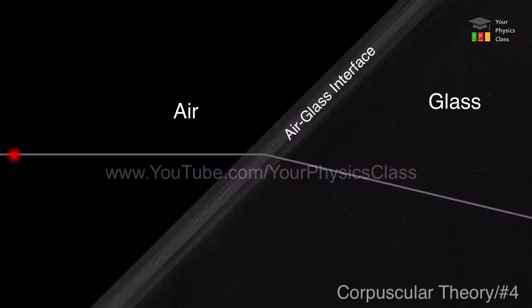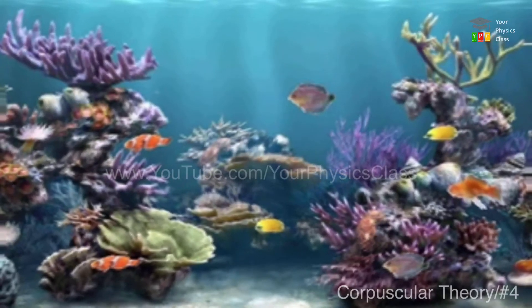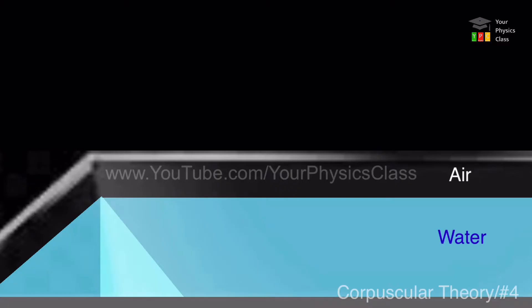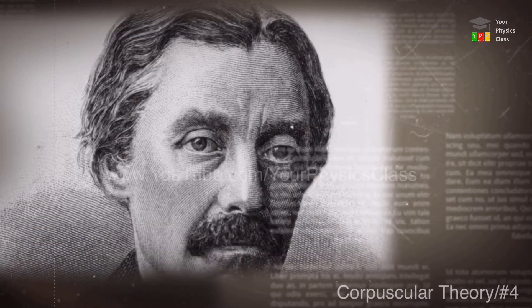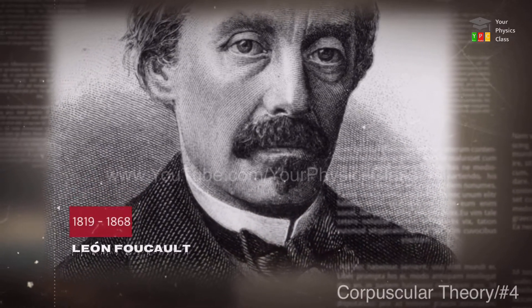According to this theory, speed of light in glass would be higher than in water, and similarly light's speed in water would be higher than that in air. But this contradicts experimental observation. Scientist Foucault disproves this fact.